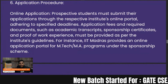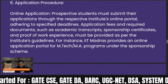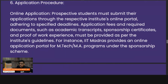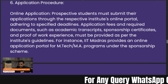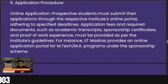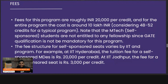Regarding the application procedure, you have to go to the respective IIT's website and fill out the online application. Prospective students must submit their application through the respective institute's online portal before the specified deadline. Required documents include academic transcripts, sponsorship certificates, and proof of work experience, as per the institute's guidelines. For instance, IIT Madras provides an online application portal for M.Tech programs under the sponsorship scheme.